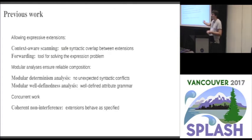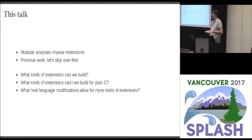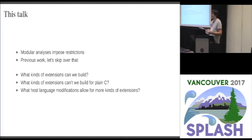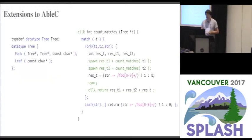Concurrently with AbleC, we've solved the last piece of this problem: coherent non-interference. This concerns the values computed for attributes on the attribute grammar, ensuring extensions behave as intended. You can prove your extension works in isolation and that proof holds on the composed compiler. Rather than detail those analyses further, I want to use AbleC to answer more interesting questions: what kinds of extensions can we build for C, what kinds can't we build due to analysis restrictions, and what host language changes might allow more extensions — because these analyses are at least partially host-language-relative.